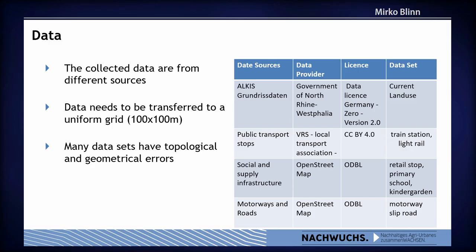But the devil is in the detail. For a good model, we must bring all data into a uniform grid of 100 by 100 meters per grid cell. One problem is that most data have topological and geometric errors. So we have the data, but now we must find a model.